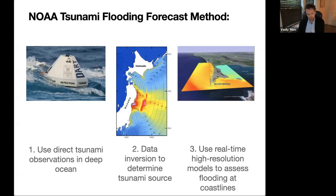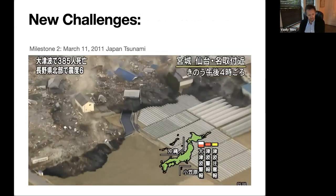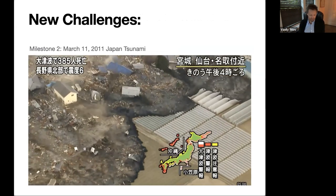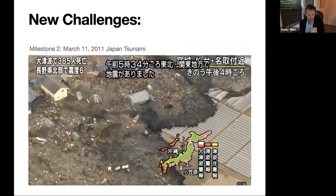The source — the permanent seafloor displacement — is used as the initial condition for near-coast simulation to provide the flooding forecast. The flooding extent is the main parameter we're looking for. To show what exactly we're trying to forecast, I want to show a video of the March 11, 2011 Japan tsunami, to illustrate what tsunami flooding actually looks like.